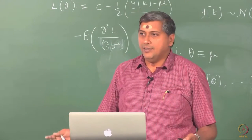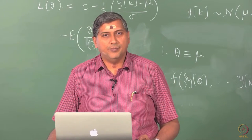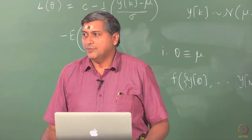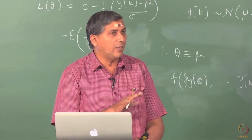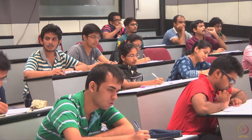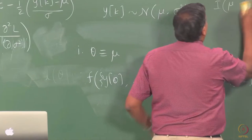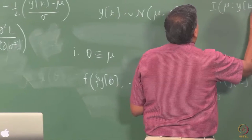I will give you a minute to come up with the answer for the information contained about the single parameter mu. The rest of the procedure is straightforward: take the logarithm of the likelihood function, differentiate with respect to mu, take the second derivative, then take the negative expectation — and that is your answer. The information contained in mu using a single observation is 1/σ².